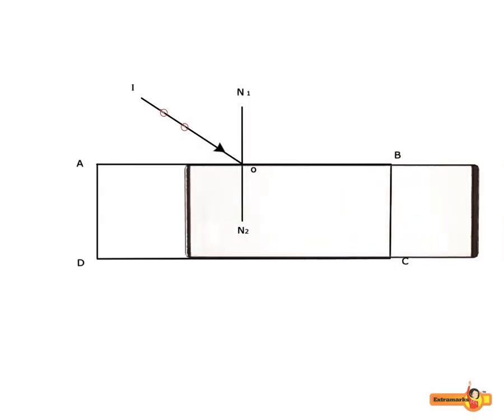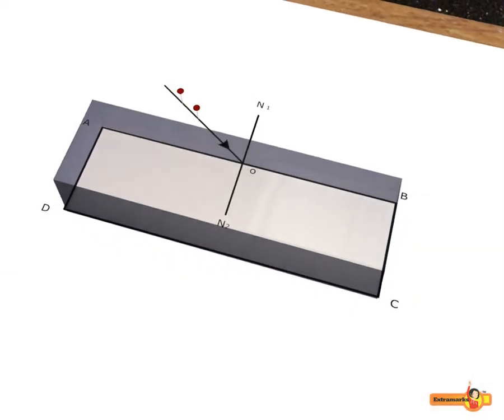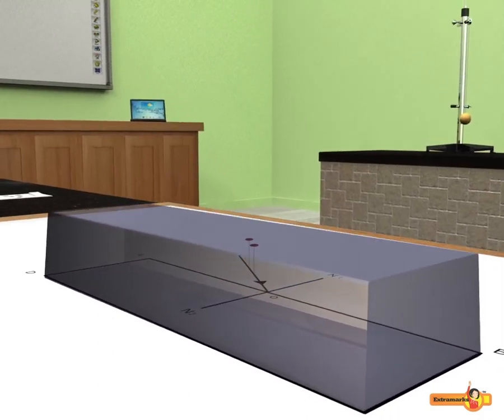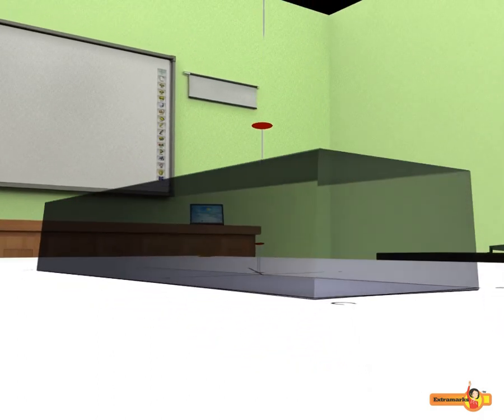Place the glass slab again on its initial position, i.e., A, B, C and D. Looking from the other side, C, D, fix two pins such that all the four pins lie in a straight line.